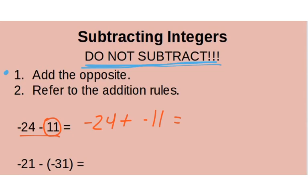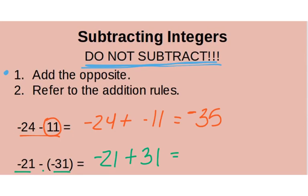Let's rewrite the next one: negative 21 minus negative 31 becomes negative 21 plus positive 31, because the opposite of negative 31 is positive 31. Going back to the first example: negative 24 plus negative 11 — same signs, so just add them: 24 plus 11 is 35, and since both are negative, the answer is negative 35. For negative 21 plus positive 31 — different signs, so subtract: 31 minus 21 is 10. Since 31 has the biggest absolute value, the answer is positive 10.